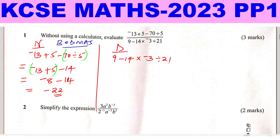Now let's go to the denominator. We have multiplication, subtraction, and division. According to BODMAS, the first operation should be division. So we have 9 subtract 14 multiply by negative 3 divided by 21, which gives negative 1 over 7.